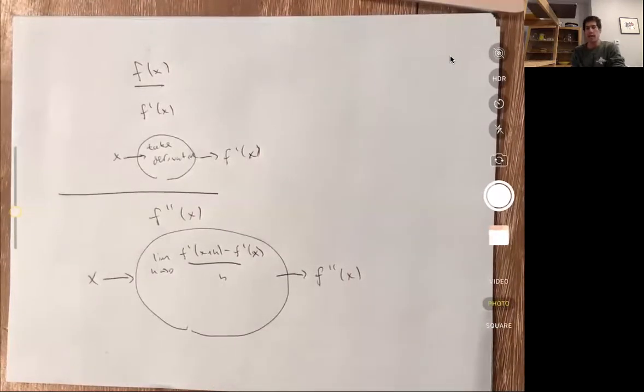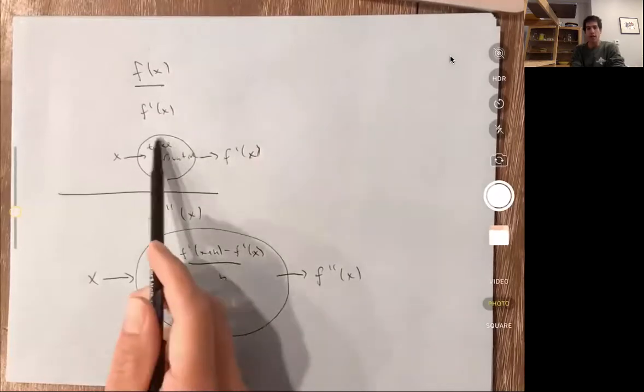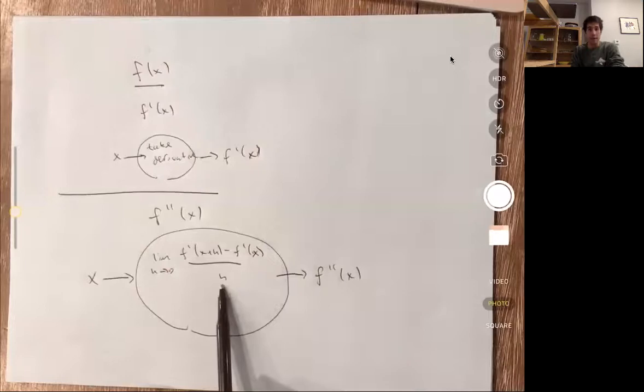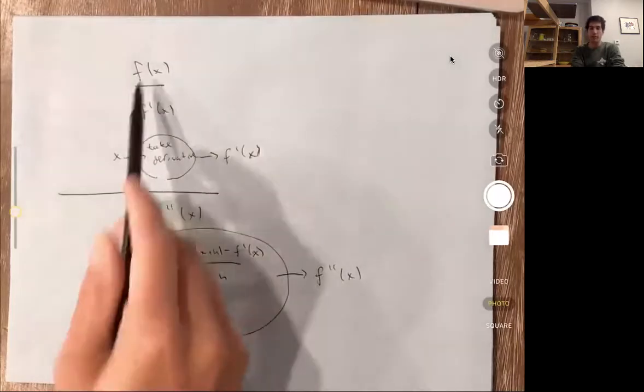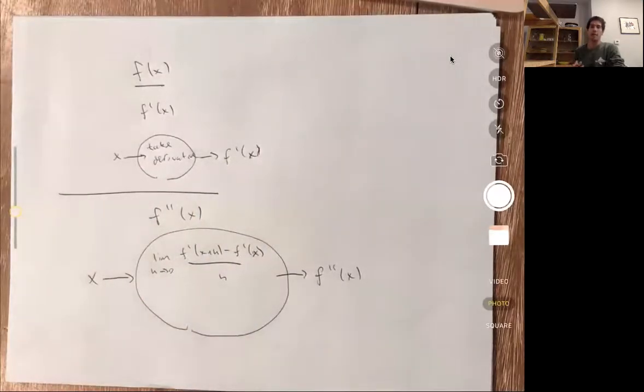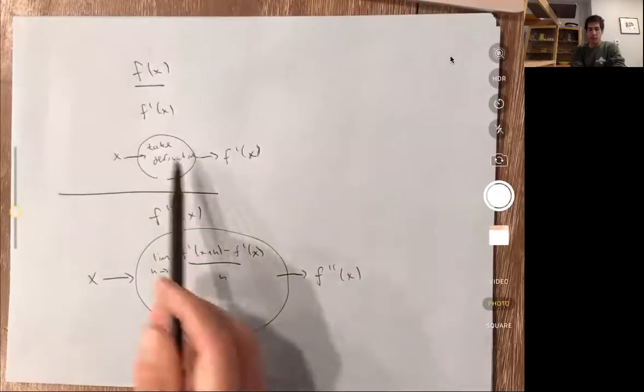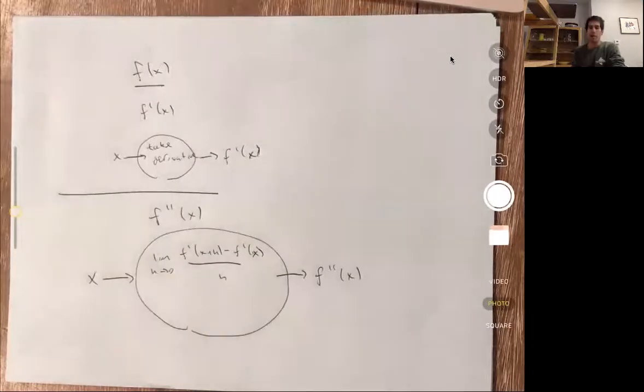One thing I'll note is that it is useful to have a formula for f prime of x if you're going to compute a limit like this. If you don't have a formula for f prime of x, then this is a limit of limits. You'd have to write this f prime as a limit itself involving f. And so that's going to get very complicated to evaluate. And so this is going to be easiest to work with if we are able to figure out a formula for f prime of x.